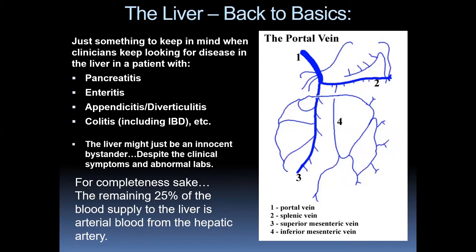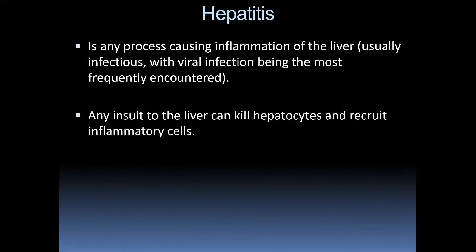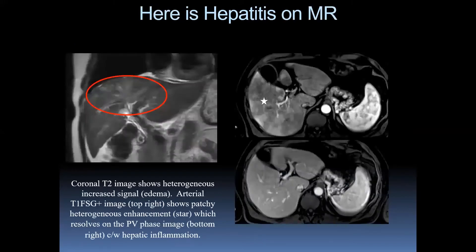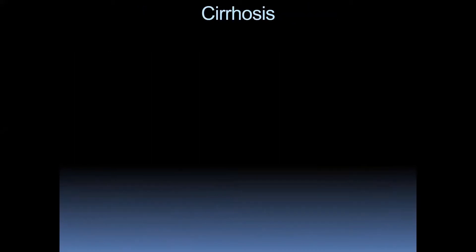For completeness, the remaining 25% of blood supply to the liver is arterial blood from the hepatic artery. Hepatitis is any process causing inflammation of the liver, usually infectious — viral infection being most frequently encountered. Any insult to the liver can kill hepatocytes and recruit inflammatory cells. Here is hepatitis on MR: coronal T2 imaging shows heterogeneous increased signal — that's edema — and the arterial post-contrast image shows patchy heterogeneous enhancement which resolves on the portal venous phase, consistent with hepatic inflammation.